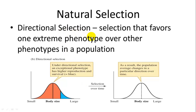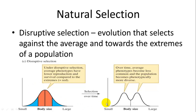Directional selection favors one extreme over the other, moving the curve to the right or to the left. Disruptive selection is where both extremes are favored, and the middle or mean is selected against, resulting in a bimodal distribution.